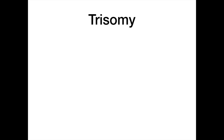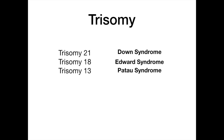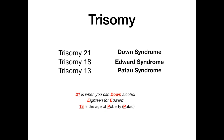The three trisomies that classically present are trisomy 21, trisomy 18, and trisomy 13 — Down syndrome, Edward syndrome, and Patau syndrome. To remember which trisomy corresponds to which syndrome: 21 is when you can down alcohol — Down syndrome. 18 for Edward — the E's line up. And 13 is the age of puberty, or Patau — 13 goes with everything that has to do with P.